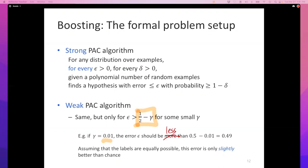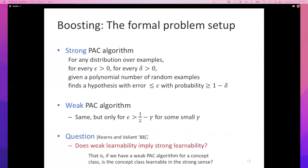So we have these two kinds of PAC algorithms: strong and weak. In 1988, Michael Kearns and Leslie Valiant in a paper asked: does weak learnability imply strong learnability?